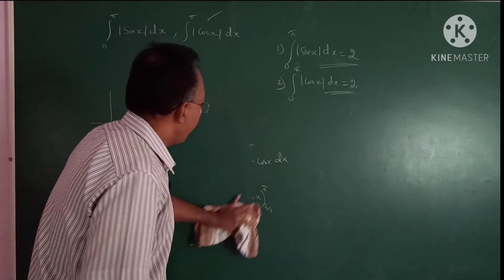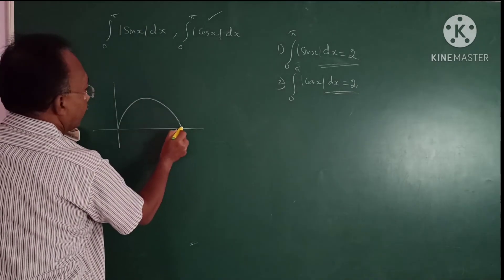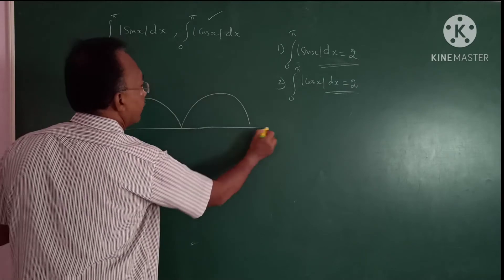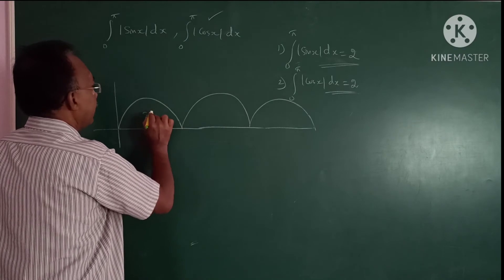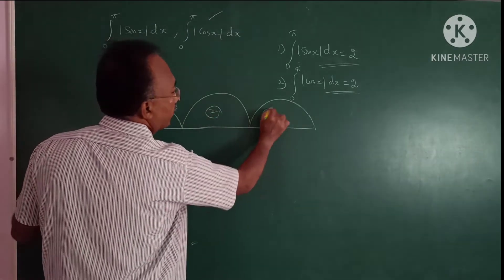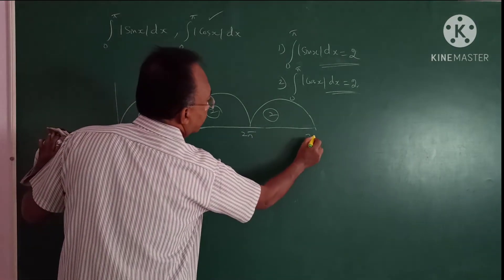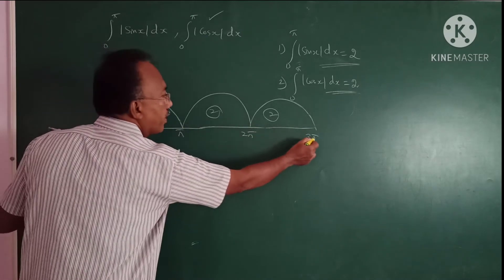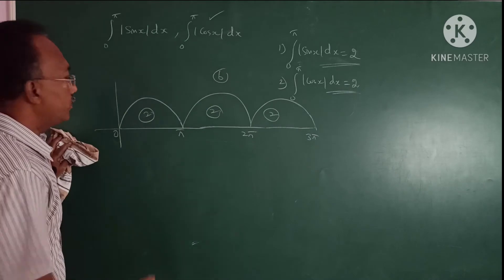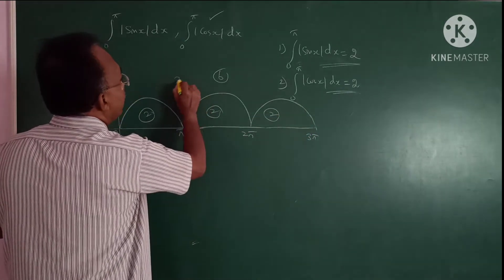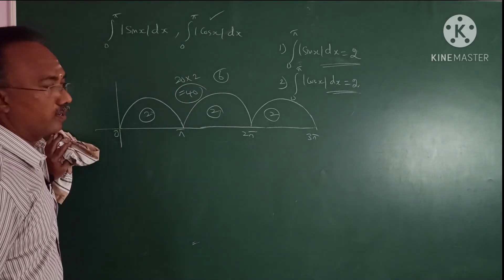If you look at 0 to π, sin x gives an answer of 2. So from 0 to 3π the answer is 2 plus 2 plus 2 = 6. And from 0 to 20π, that is 20 multiplied by 2, the answer is 40. So this is one shortcut method — each full period of π contributes 2.